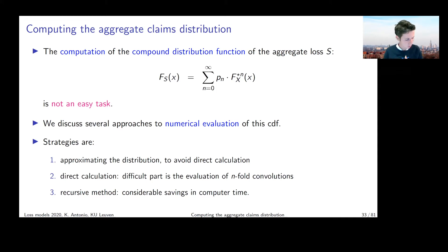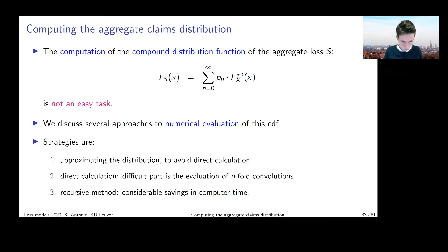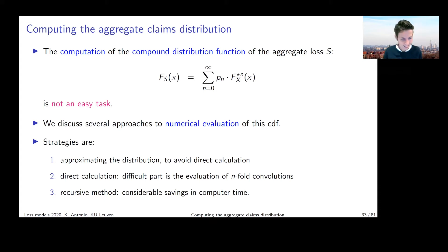The second strategy is to go for an analytic calculation, but then you cannot avoid n-fold convolutions. A third approach worth mentioning is the Panjer recursion, which we introduced in one of the previous chapters. We can also use it here.